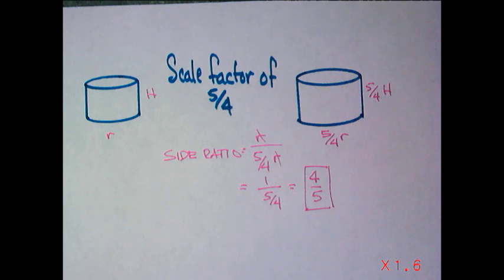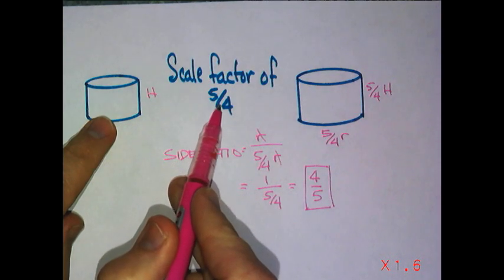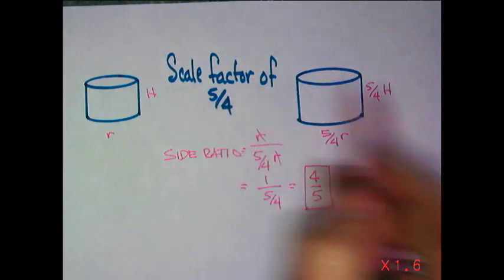That is my side ratio. If my scale factor is 5 fourths, my side ratio or radius ratio, height ratio, is 4 to 5. Because I'm looking at small to big. Because I'm going to grow by 1 and a fourth.